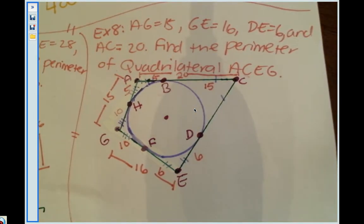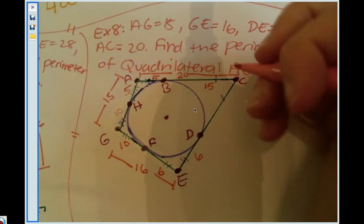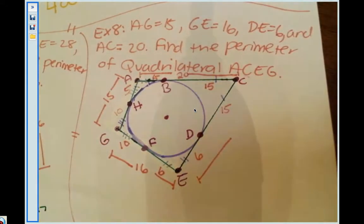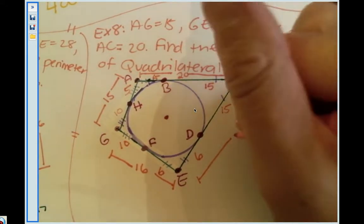The whole thing's 20, so if that is 5, 5 plus what gives me 20? That's 15. Since that's 15, this piece is 15, which means the whole length of this segment is going to be 15 plus 6, which gives me 21.